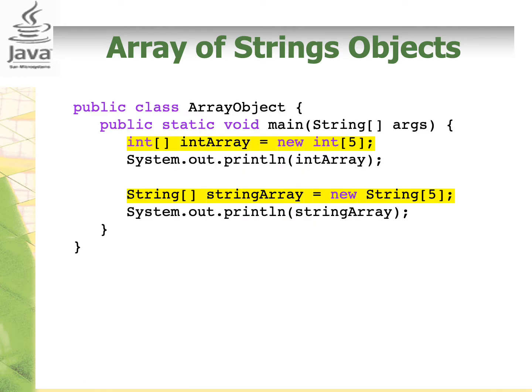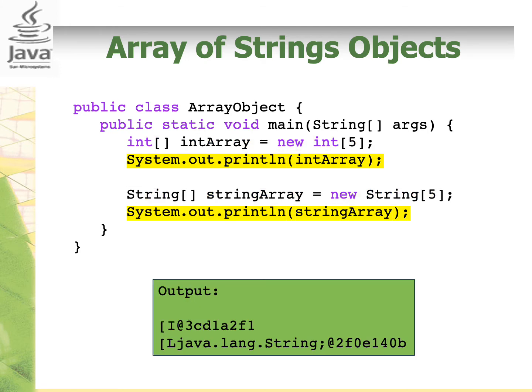Let's look at this simple code to make sense of it. Here we have two arrays. The first array object is an int and the second array object is a string. Remember that string itself is also an object. When we do System.out.println and then the name of the array for both primitive data type int and also the string object, it will give us some values which are references to the array. If you run this code, you might get different values because these values refer to the address where the objects are stored in the memory. You can see that int array and string array have different addresses because they are different array objects.